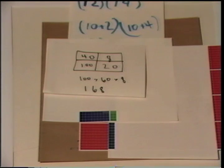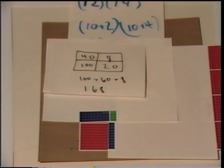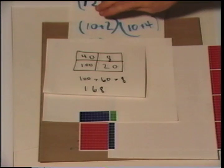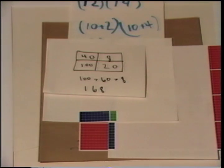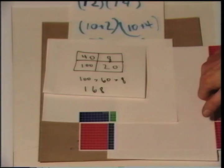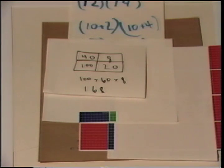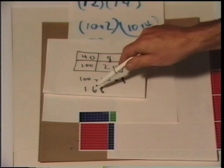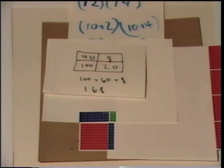What did we do when we multiplied? We found the second name — the other name — for the rectangle. We were given the first name, the factors. Now we must find the second name, the amount: 168.